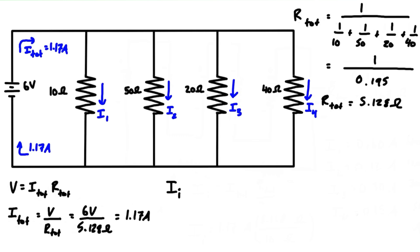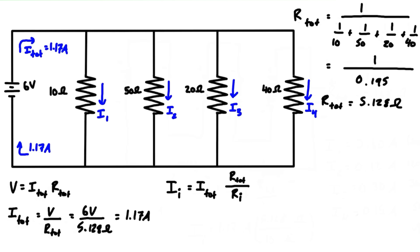The current division formula states that the current flowing through a given resistor is equal to the total current times the ratio of the total resistance over the resistance of that individual resistor. If you can't remember this, you can derive it quickly from Ohm's Law: V equals IR.